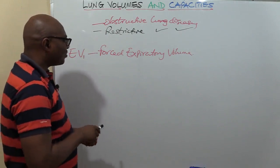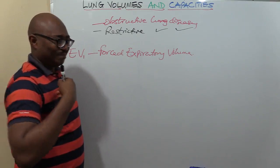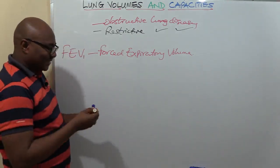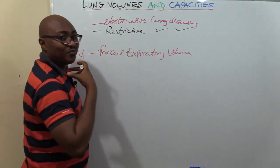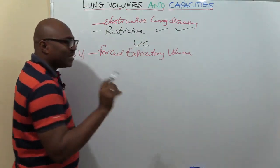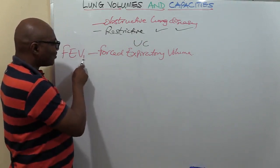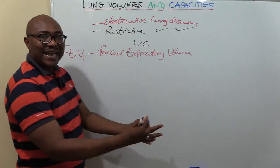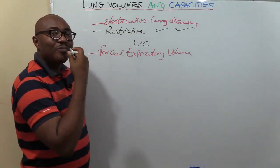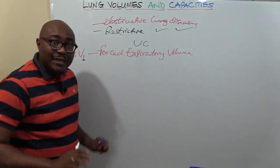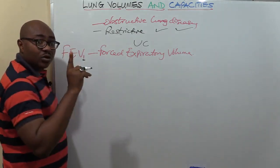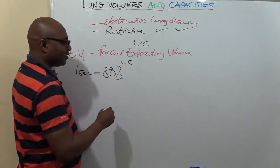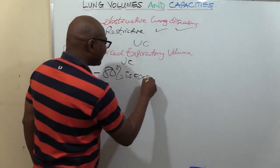FEV1 stands for Forced Expiratory Volume in one second. It is the volume of air expired forcefully in the first second after you have maximally inspired. In normal persons, after maximally inspiring, 80% of the vital capacity is expired within the first second. Since vital capacity is about 4,700 ml, that means about 3,760 ml is expired in just one second in a healthy person.